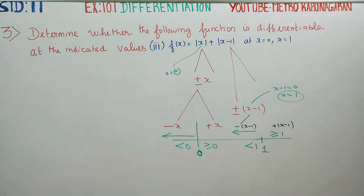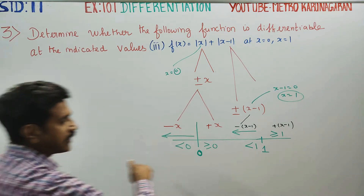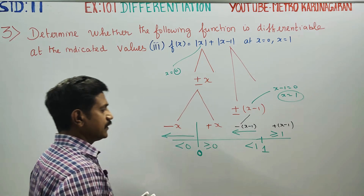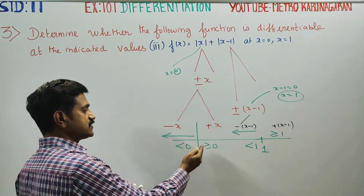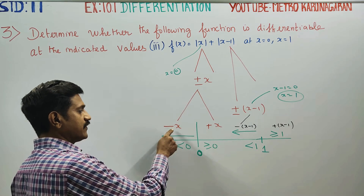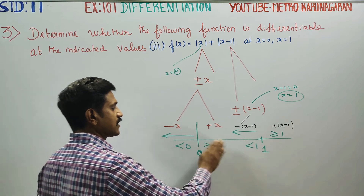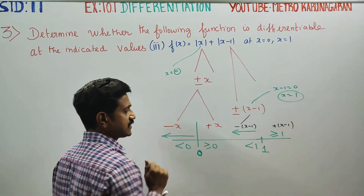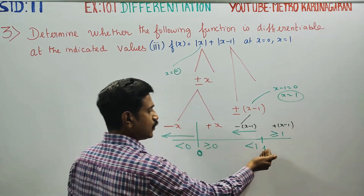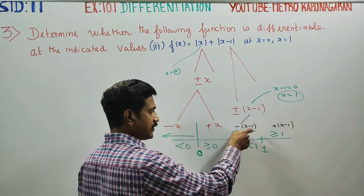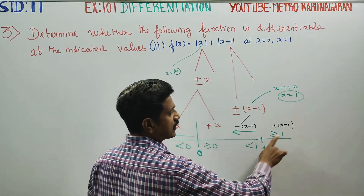If we look at the number line, we mark 0 and 1 on it to analyze the sign of each expression in the different regions.